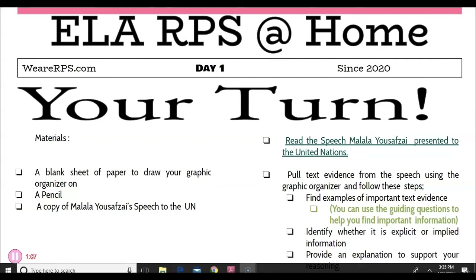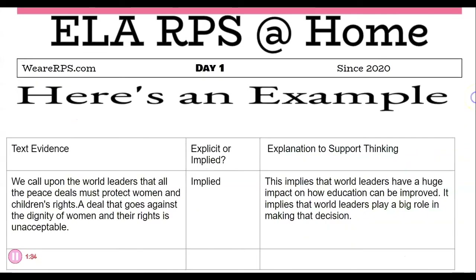You're going to find examples of important evidence. In your activity section, you'll see a document called guided questions to help you pull information to complete your activity. In your chart, you're going to identify whether the information you pulled is explicit or implied, then provide an explanation to support your reasoning. The graphic organizer has three columns: text evidence, explicit or implied, and an explanation to support your thinking. Pull what you feel is important, but use the guided questions to make sure you have all the important information. There is no limit on how much evidence you pull.